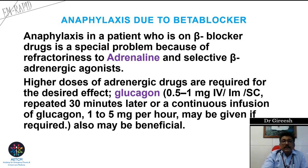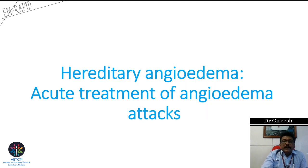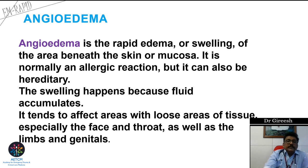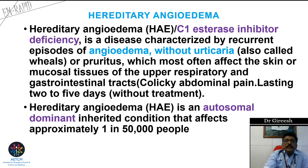An important differential diagnosis of anaphylaxis is hereditary angioedema. It is a rapid edema beneath the skin or mucosa, normally seen on the face, lips, genital area — wherever loose tissues are present. In hereditary angioedema, which is due to C1 esterase inhibitor deficiency, patients develop angioedema without urticaria, meaning there is no itching, unlike anaphylaxis.